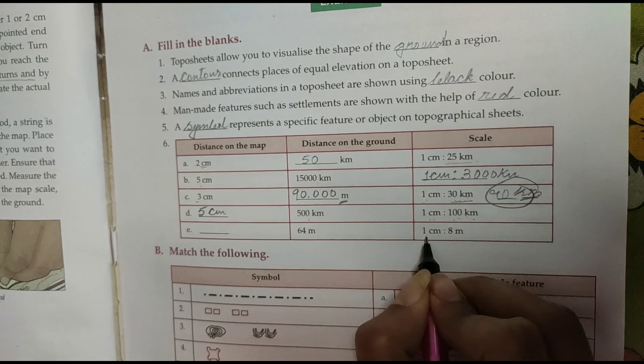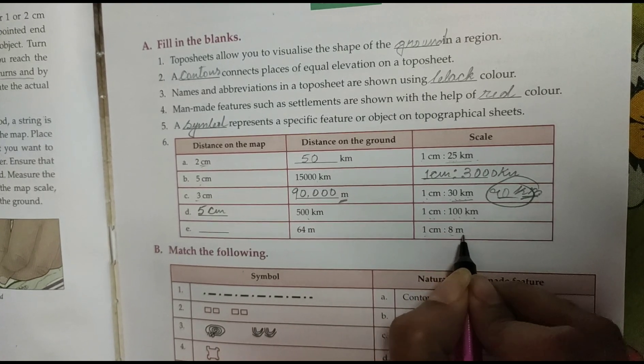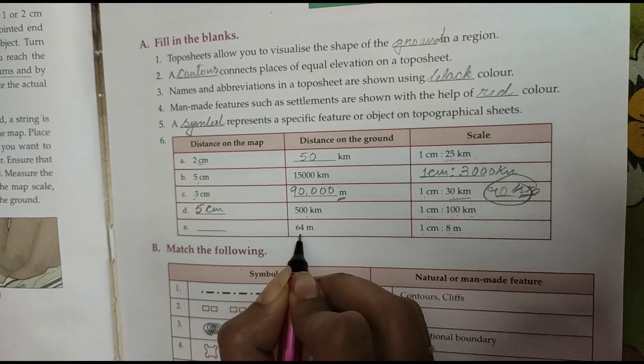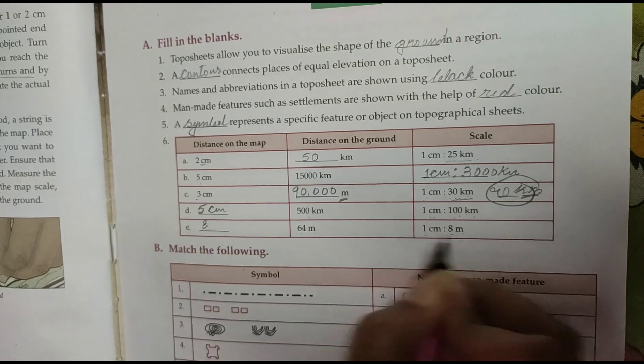Next is 1 cm showing 8 meter. It is 64 meter, so it is 8 cm. 8 into 8, 8 cm.